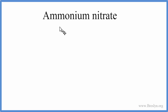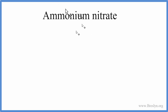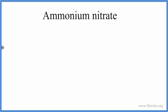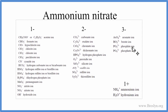In this video, we'll write the formula for ammonium nitrate. The first thing we need to do is figure out what ammonium is. Ammonium is an ion, and you won't find it on the periodic table. It's not a single element — it's actually a group of atoms together with a charge. We can look that up on a table of common polyatomic ions.